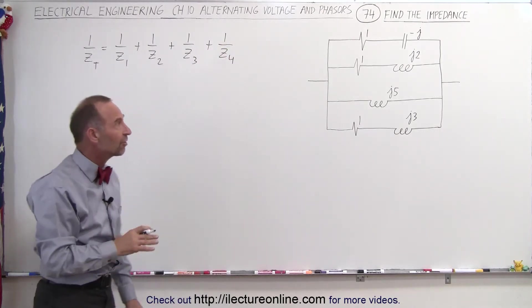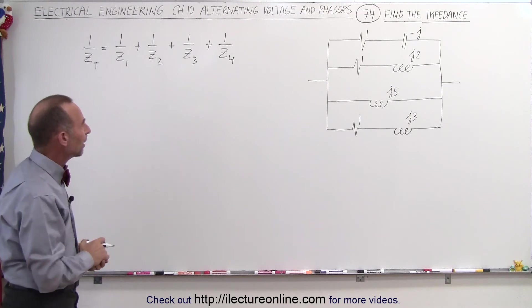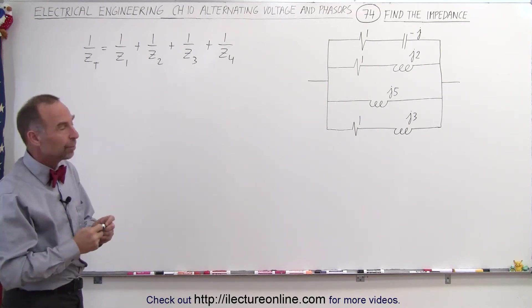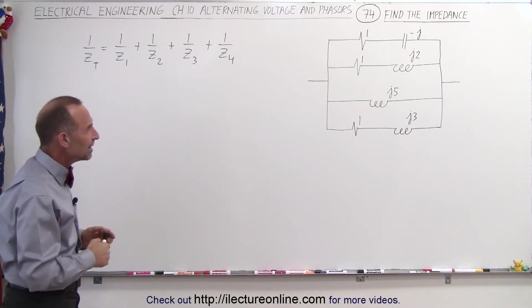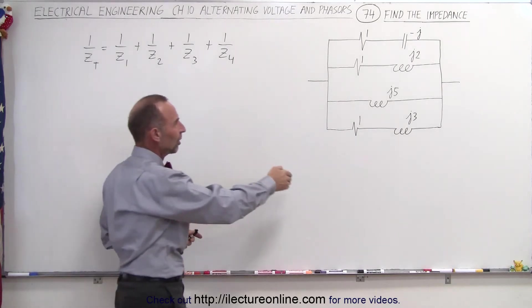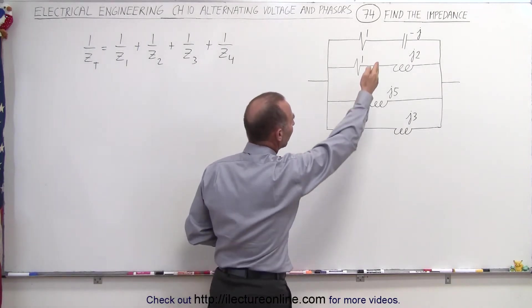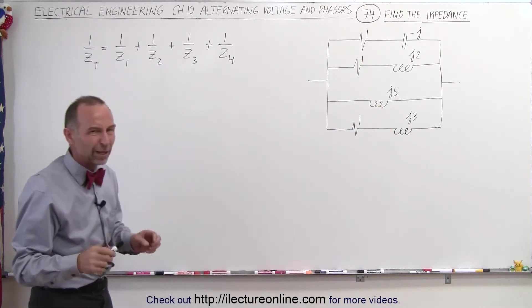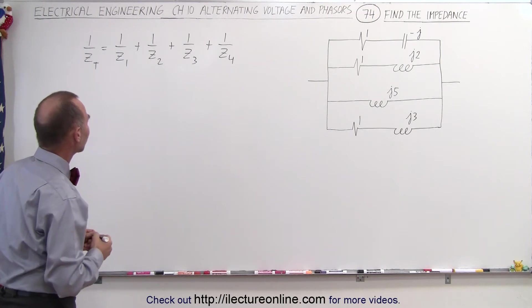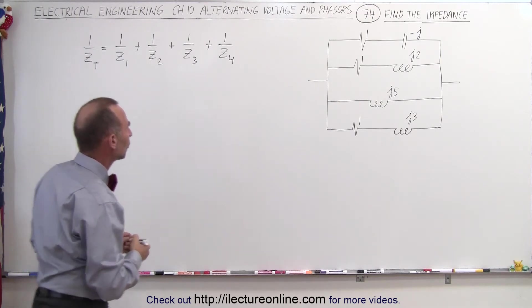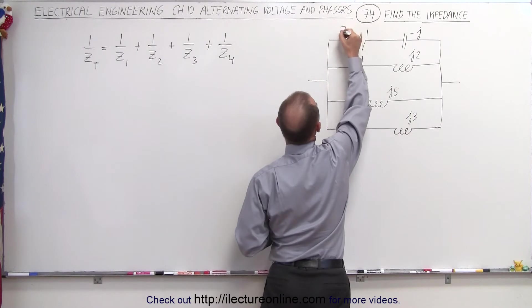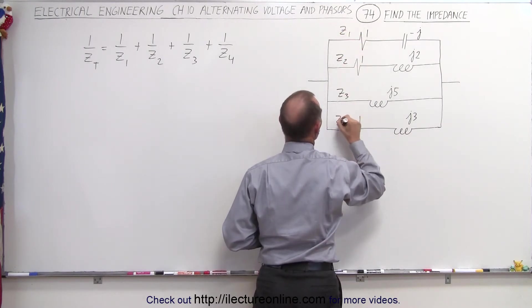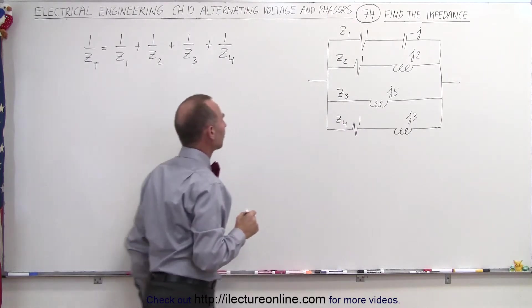So we're going to illustrate in this example how we need to do that. Notice that we kept the numbers quite simple because we're just after the technique. Each of the resistors has a resistance of one ohm. We have one capacitor and three inductors — small numbers just to make the problem easier to work with. We have the impedance Z1 in the first branch, Z2 in the second branch, Z3 in the third branch, and Z4 in the fourth branch.